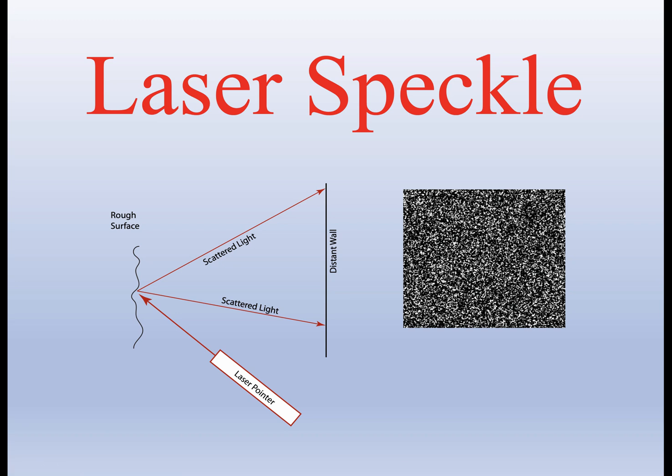If you shine that scattered light on a distant wall and look at the patterns of bright and dark, you essentially get the same pattern. This is what is known as laser speckle.